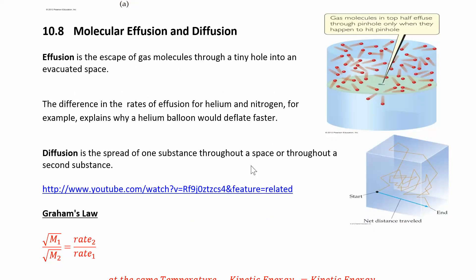You can think about having gases trapped in a balloon, one balloon filled with helium, one balloon filled with nitrogen. It turns out that the helium balloon would deflate faster than the nitrogen, because helium weighs less. It has a lower molar mass. Those molecules are going to travel faster. They're going to find their way out of the balloon faster than the nitrogen.